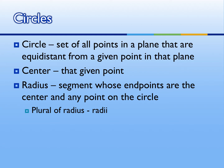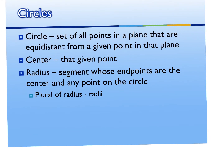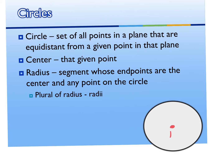Let me go ahead and draw a picture of a circle, label it with the center point, and draw in a radius. If I put a point in the center and call it point M, I would name this circle by either writing out the word circle and then the center point, or just like we did with triangles, draw a little picture of a circle and label the center point. These are two ways to name a circle.